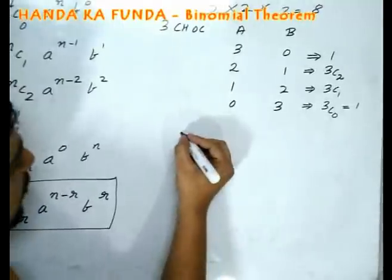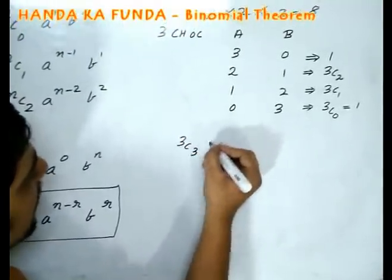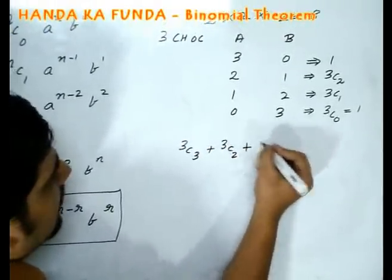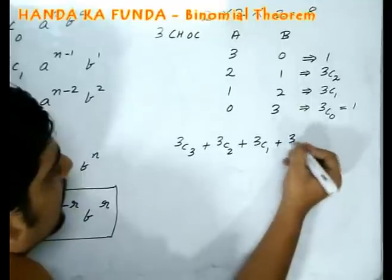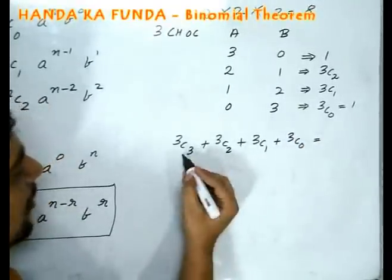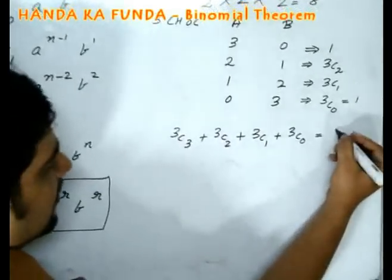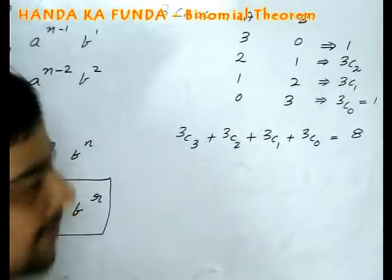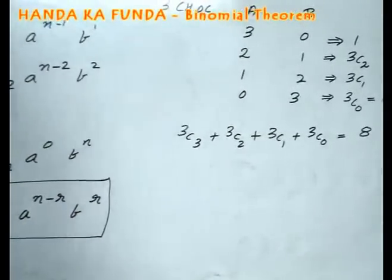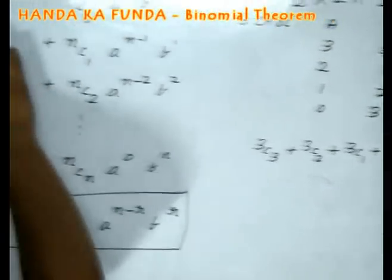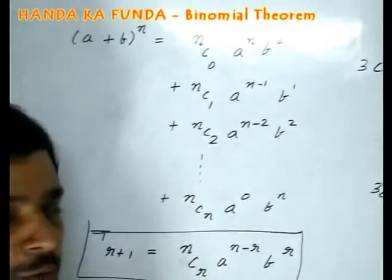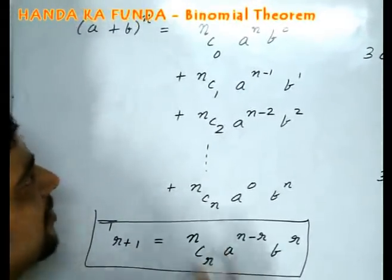Another way of looking at it would be 3C3 plus 3C2 plus 3C1 plus 3C0. If I calculate it, 1 plus 3 plus 3 plus 1 that will also come out as 8. Another method of looking at it would be if I look at the formula and I put a equals 1 and b equals 1. Do you realize what will emerge?